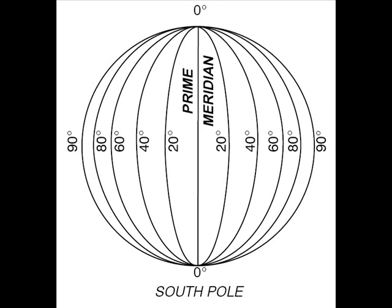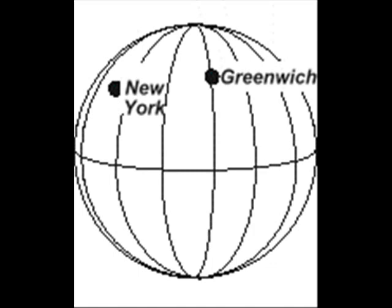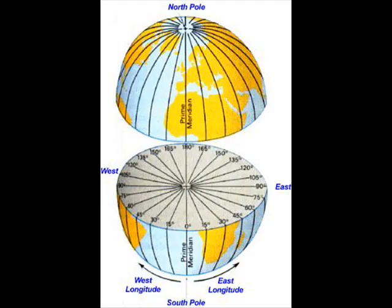Longitude is the angular distance measured in degrees. It tells how far from Greenwich, England, any place happens to be — east or west from Greenwich, England, wherever a place may be. Longitude gives the angular distance scientifically.